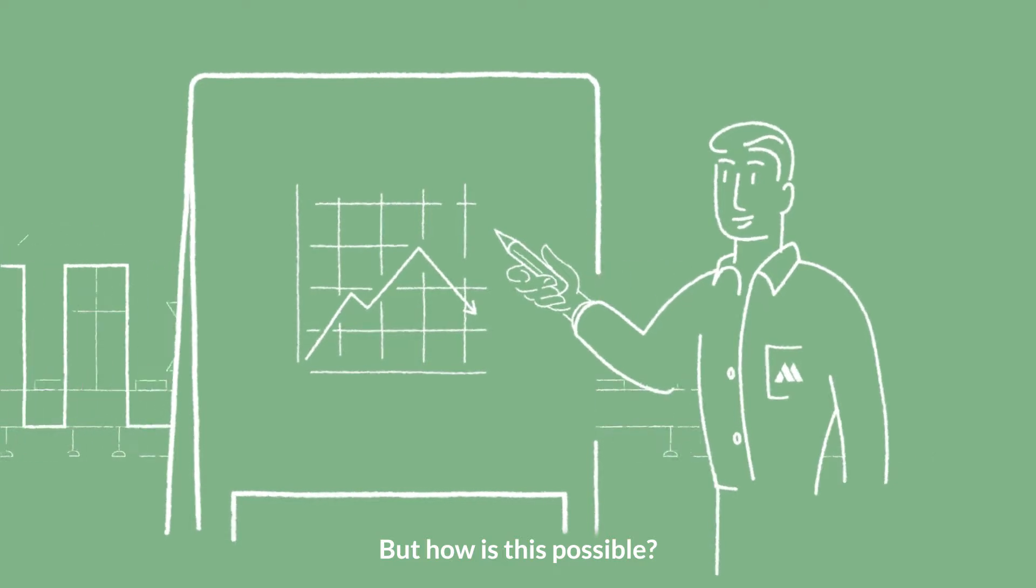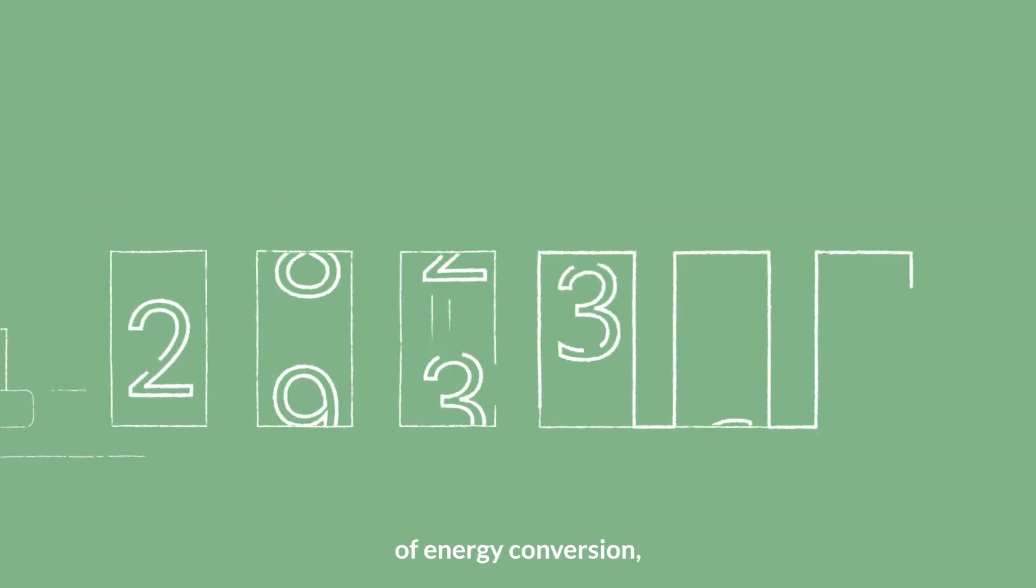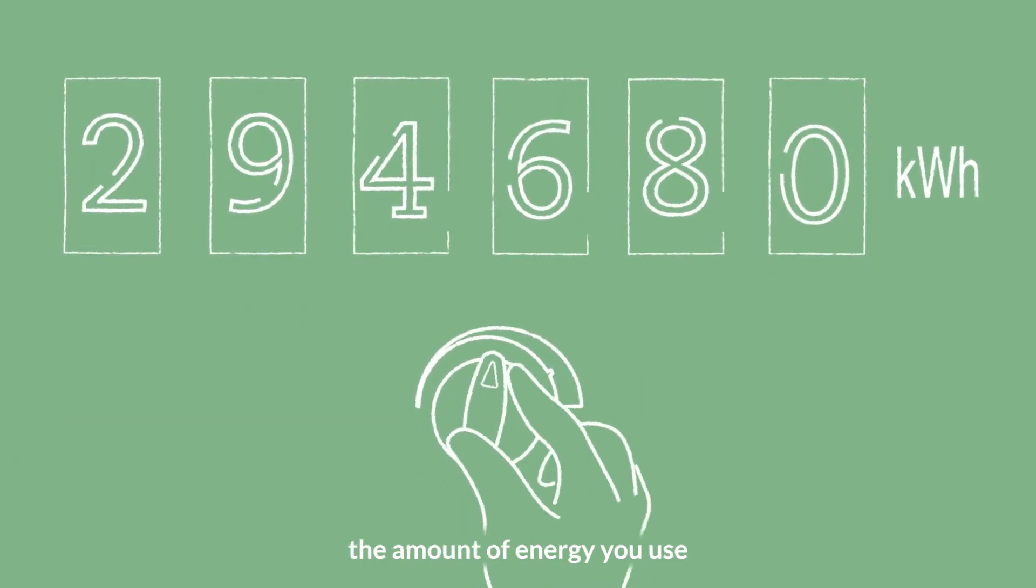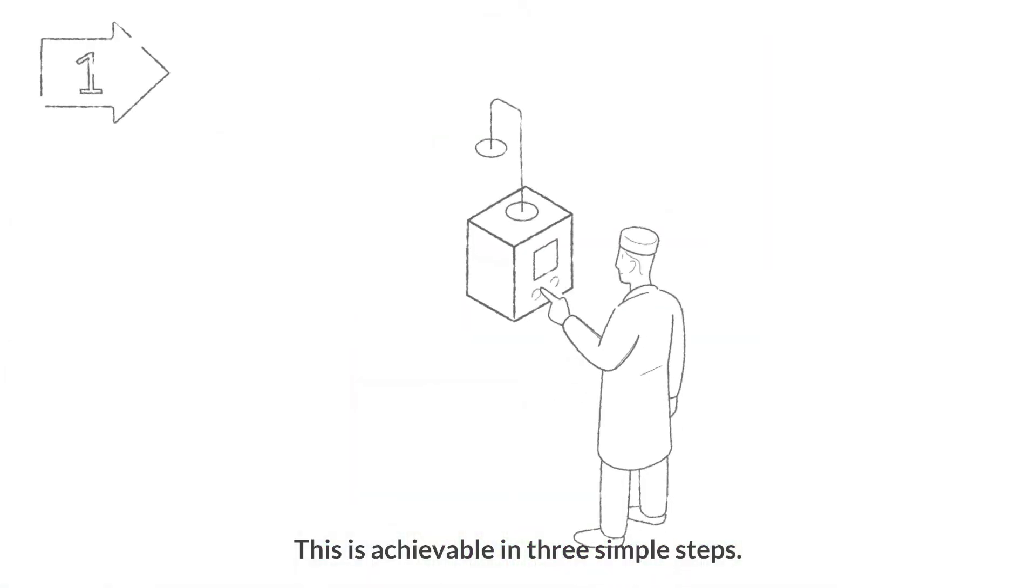But how is this possible? By focusing on the efficiency of energy conversion, you can significantly reduce the amount of energy you use without altering your production process. This is achievable in three simple steps.